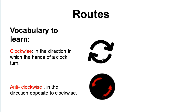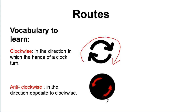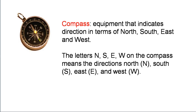There are some vocabulary to learn in this section. Clockwise is movement in the direction in which the hands of a clock turn. This is clockwise. Anticlockwise is the movement in the direction opposite to clockwise. This is anticlockwise. Compass is an equipment that indicates direction in terms of north, south, east and west.